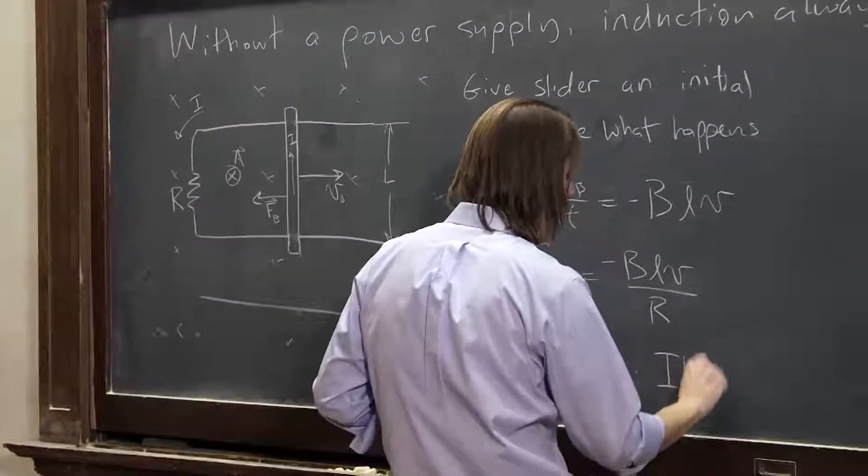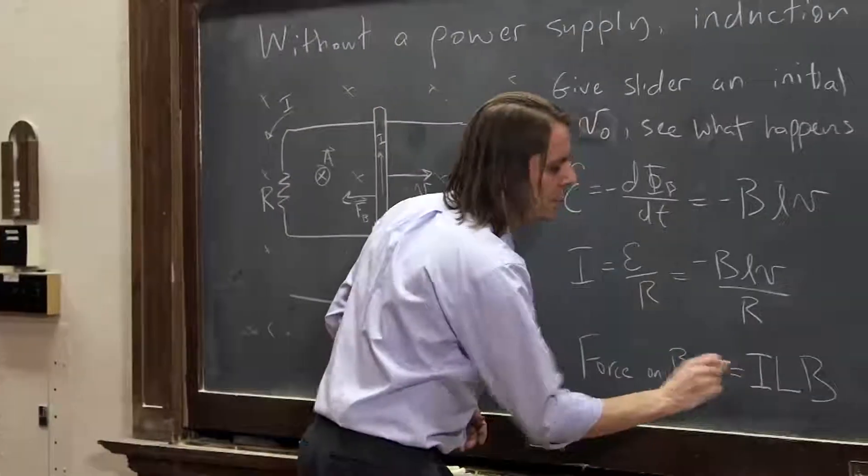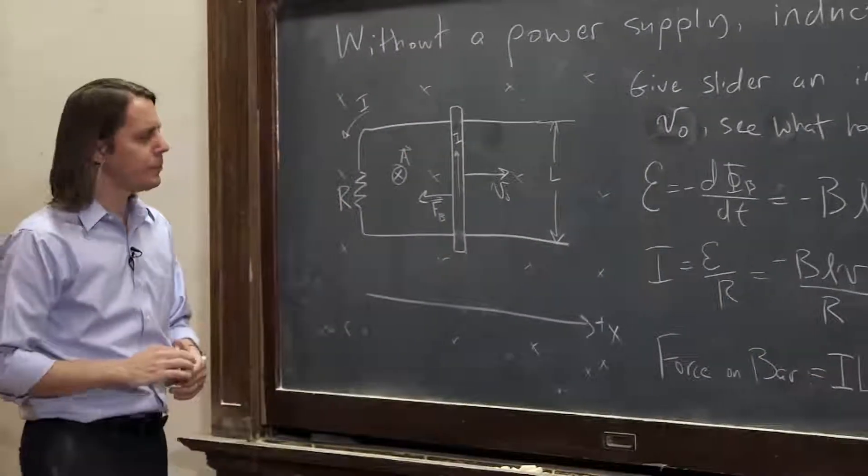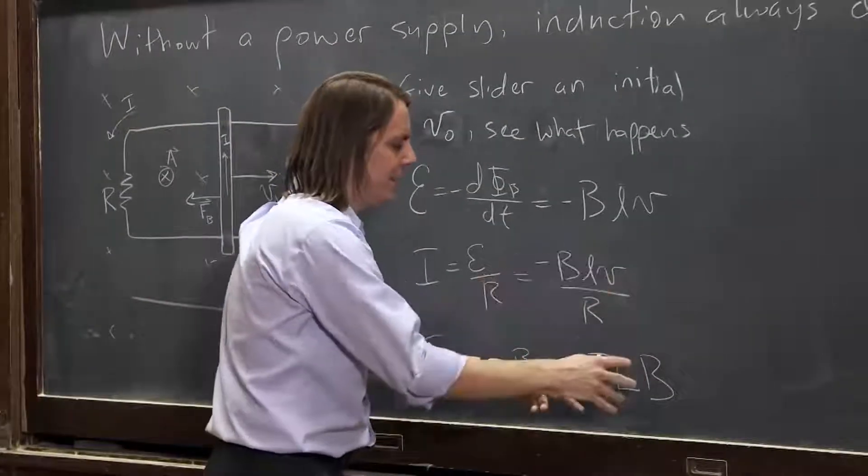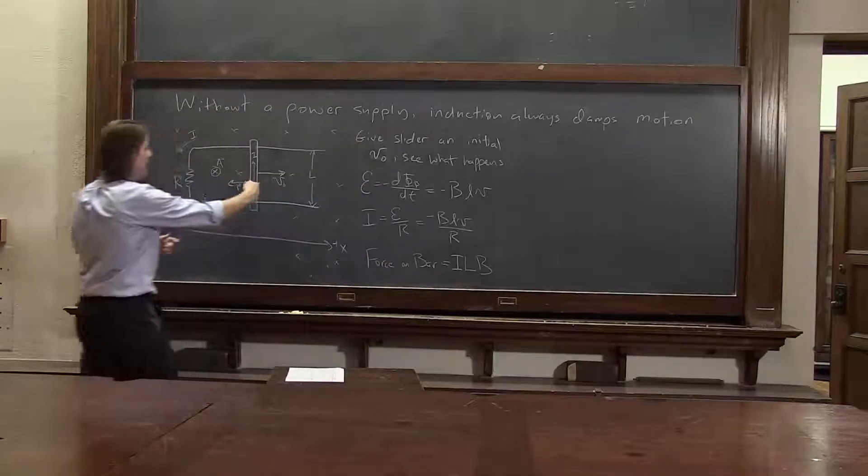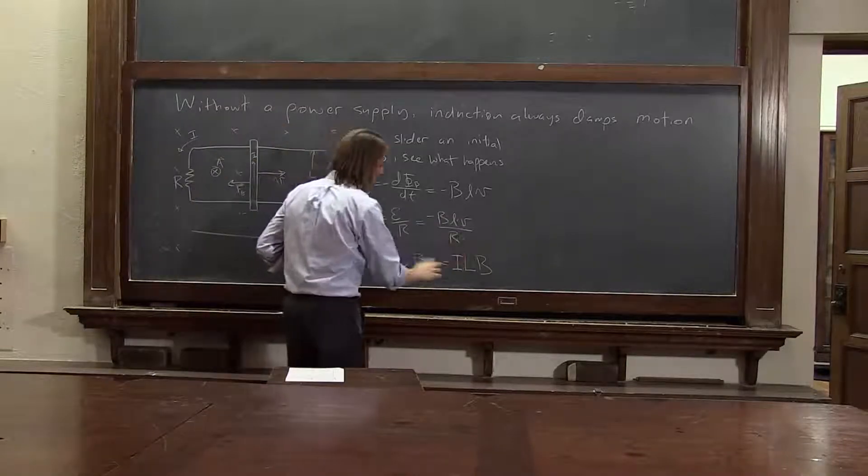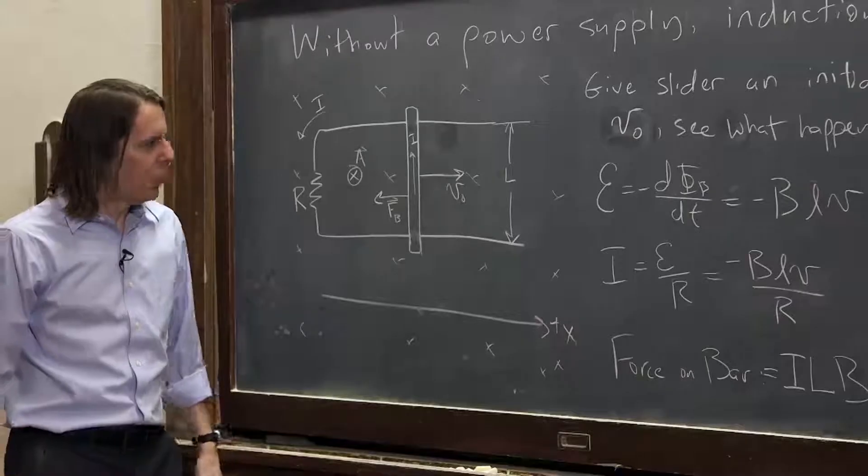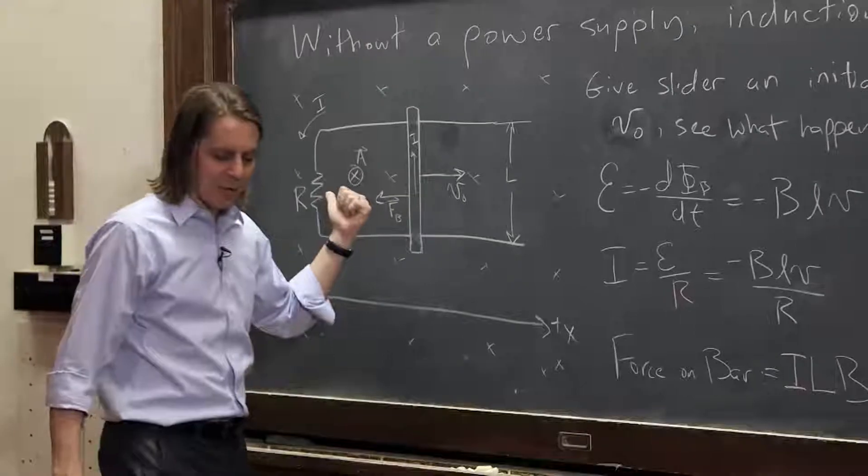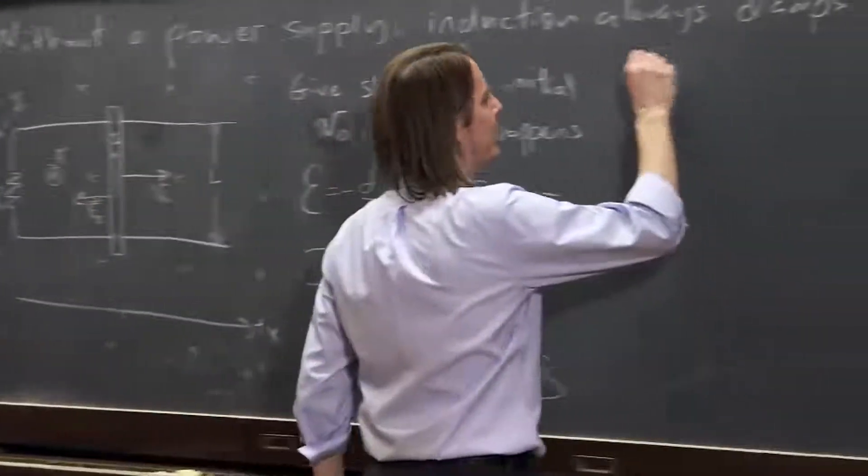Since everything's at 90 degrees, we just worry about magnitudes. Force on bar is ILB. Now the current is negative, but when we go plugging it in here, that will make it negative. So you know that the force is in the negative x direction. It should come out negative, but it will. Because this negative value goes in here, the force will come out negative. So that part's okay.